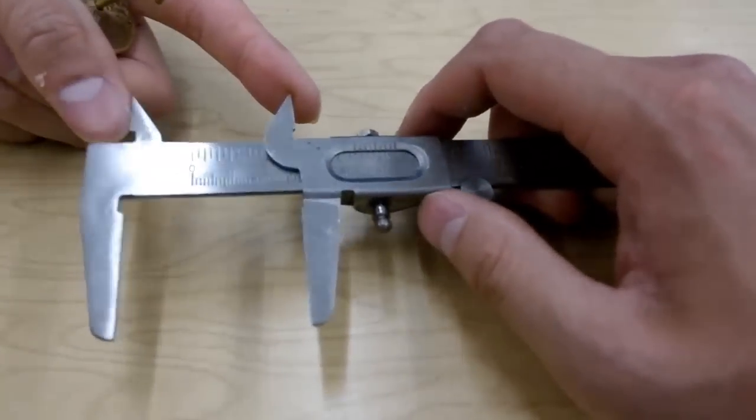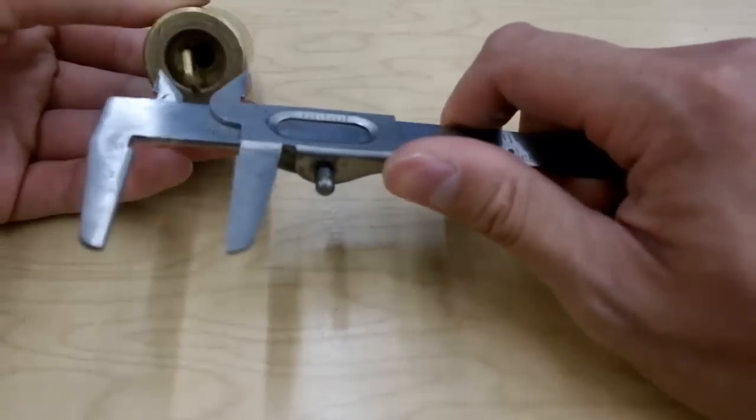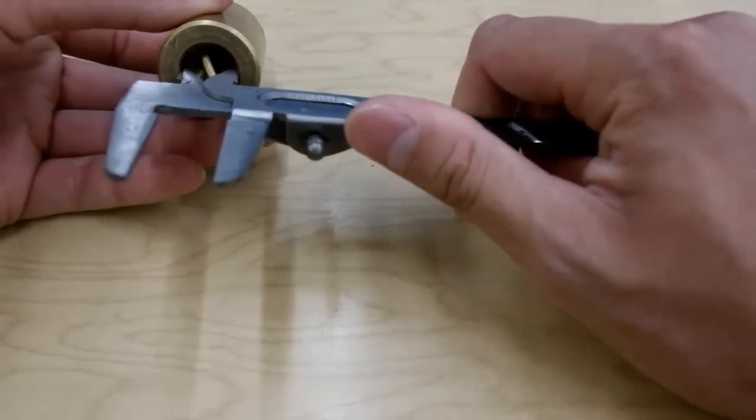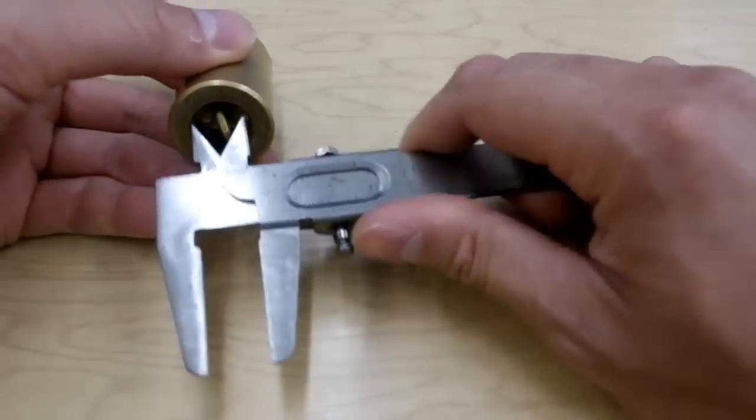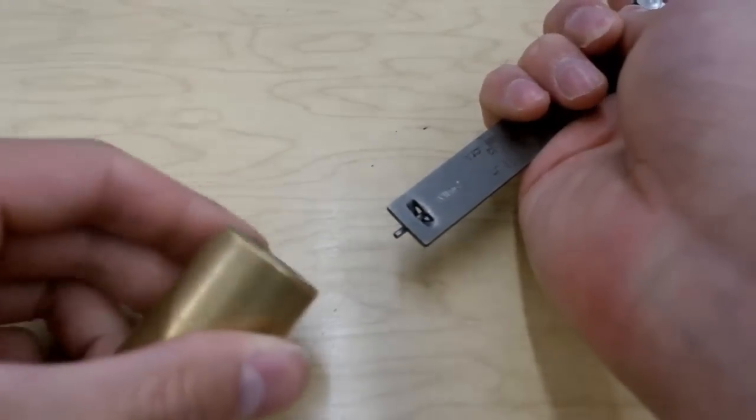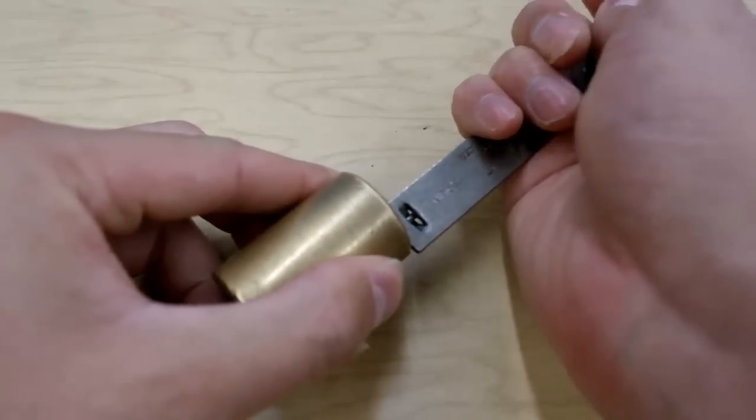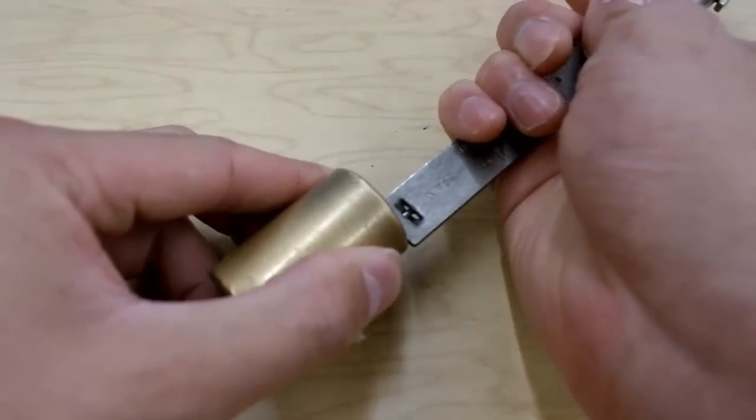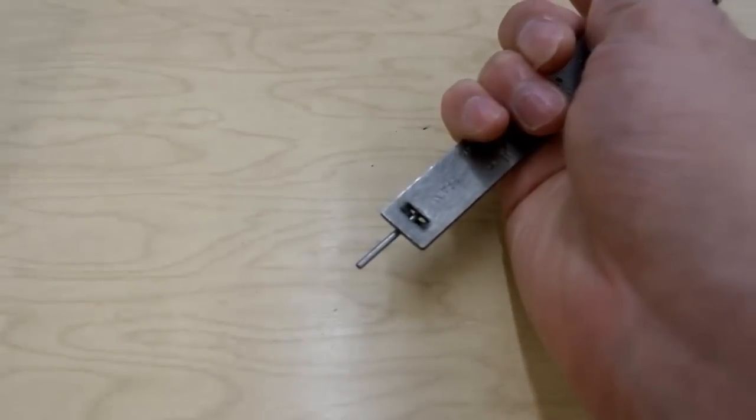This part up here allows us to measure the size of gaps and holes. And then this part back here, it's for measuring the depth of the hole. So we put it right there, hit the bottom, and then we know how deep the hole is.